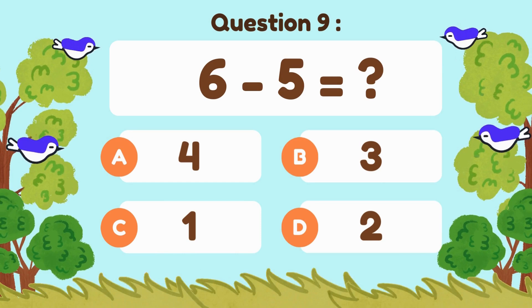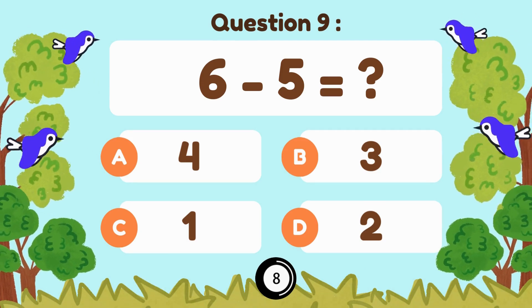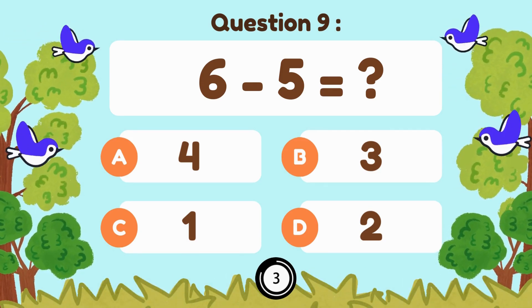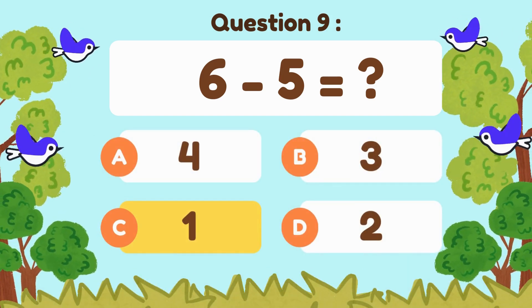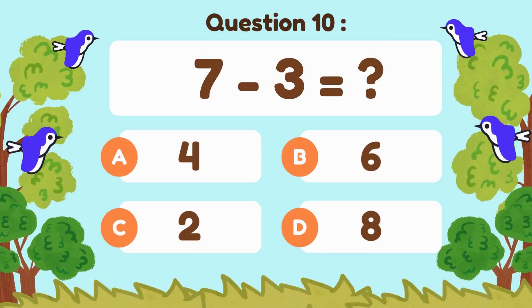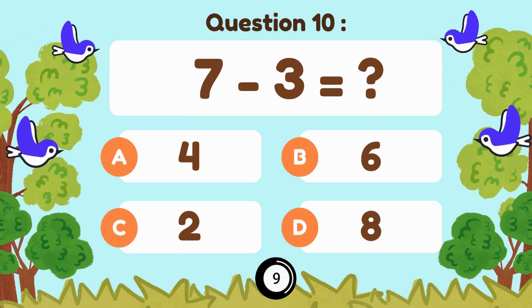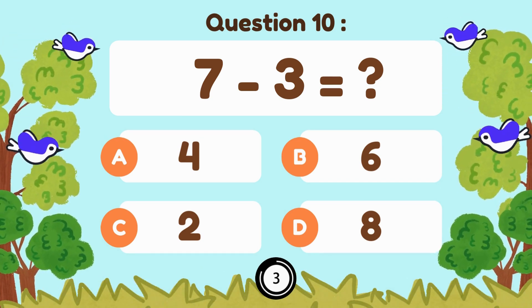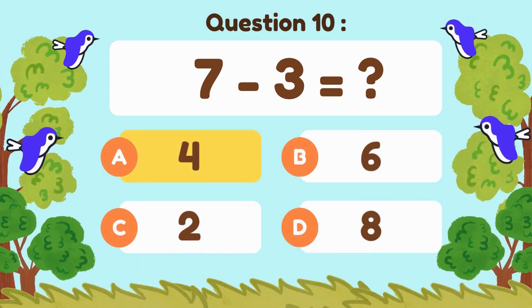6 minus 5. 6 minus 5 equals 1. 7 minus 3. 7 minus 3 equals 4.